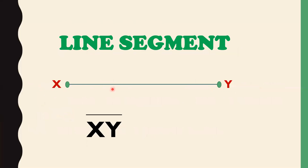This is an example of a line segment. In a line segment, we put a dot on both sides. You can write it as XY with a line segment symbol on the upper part. So a line segment has dots — not arrows — on both ends.